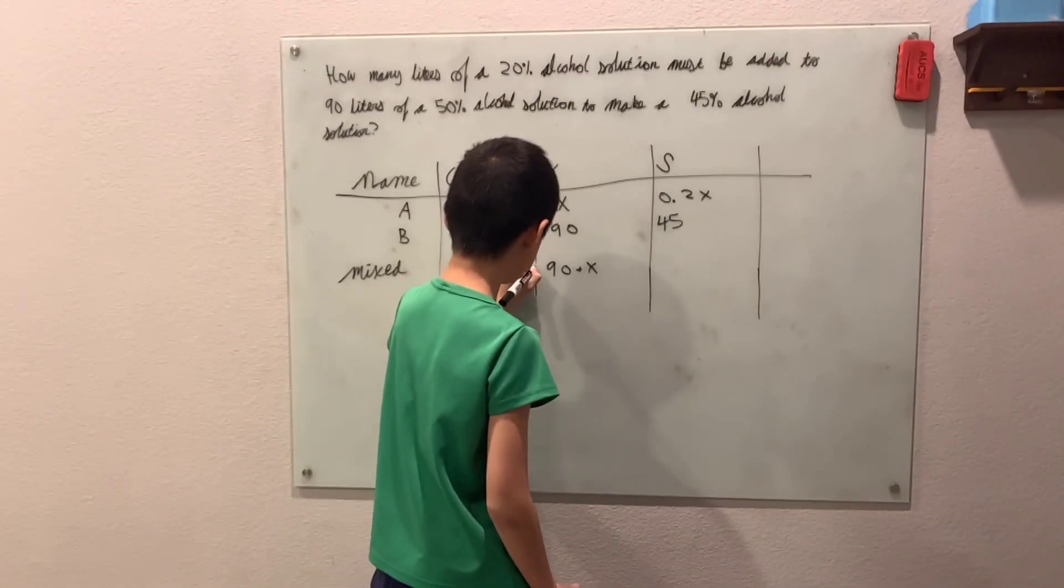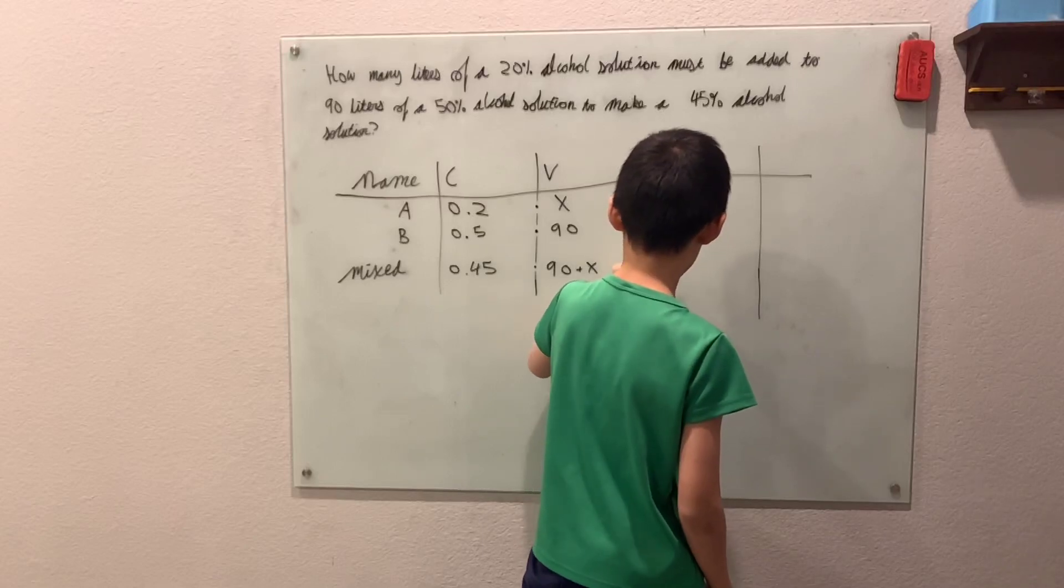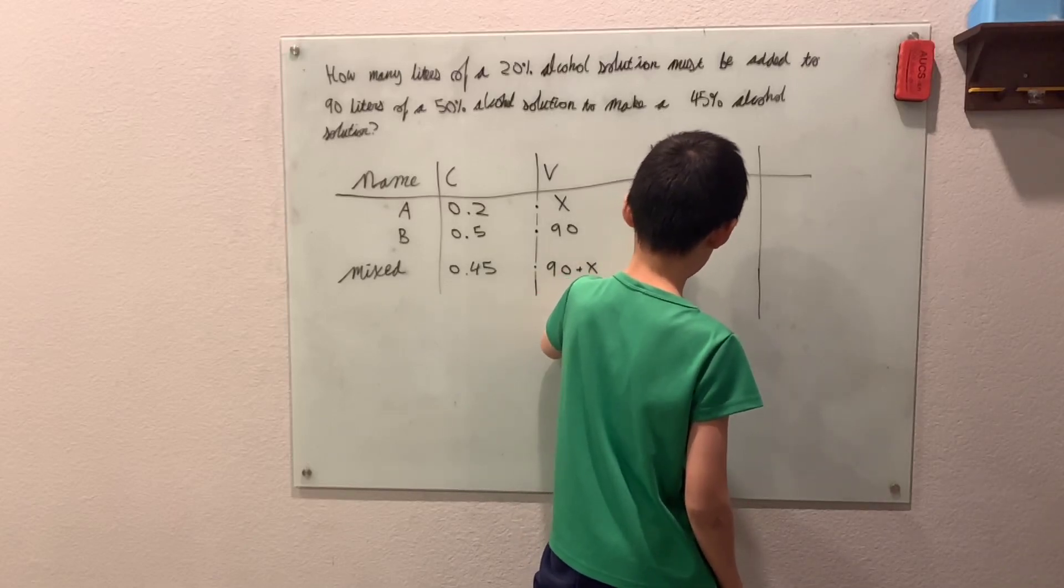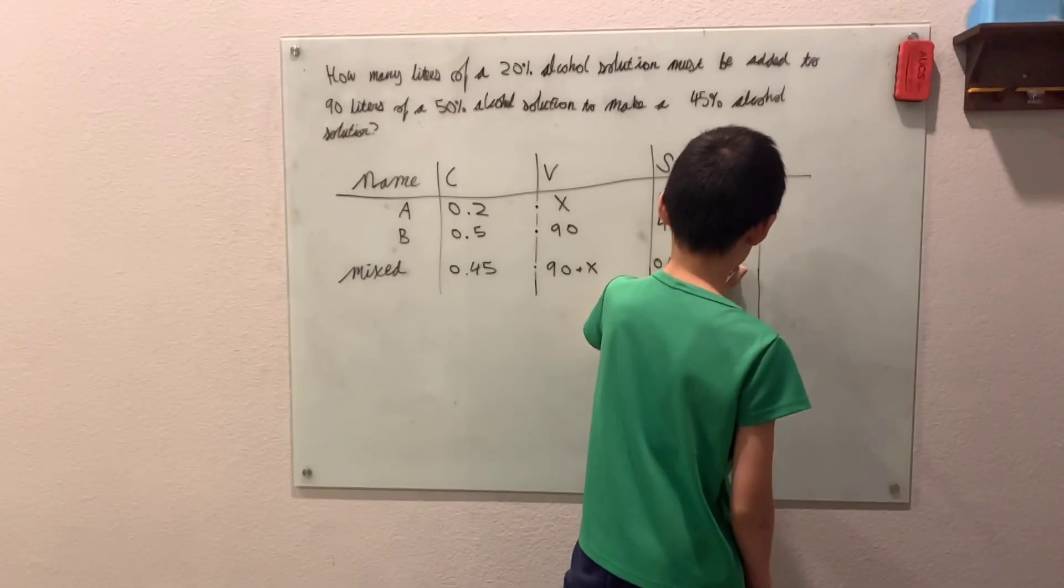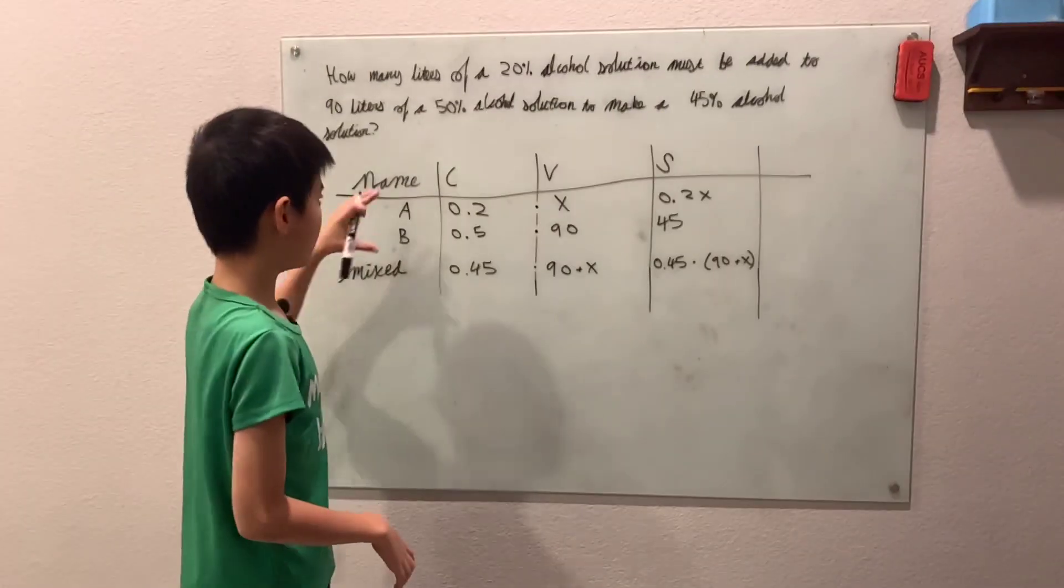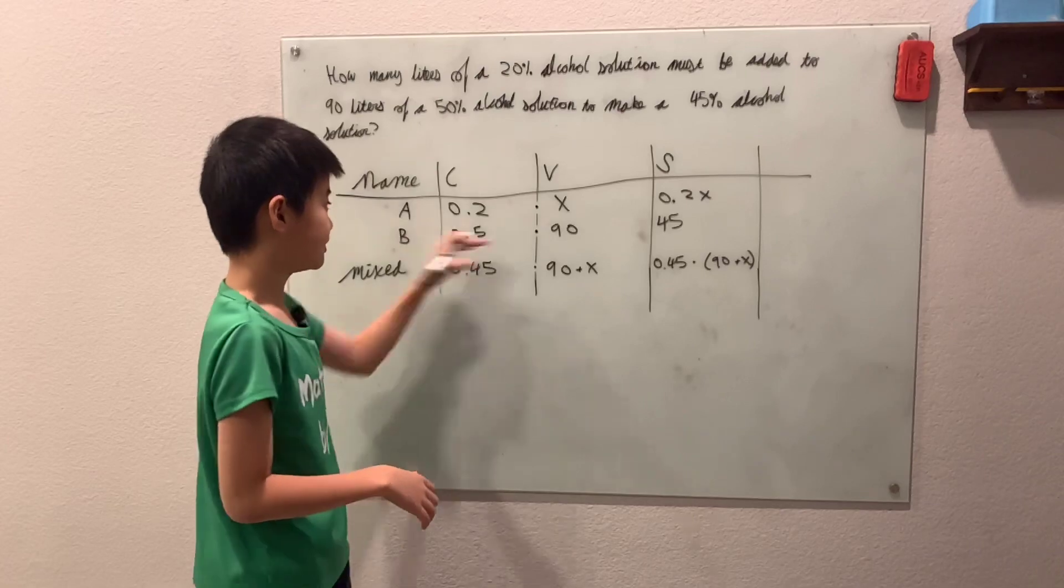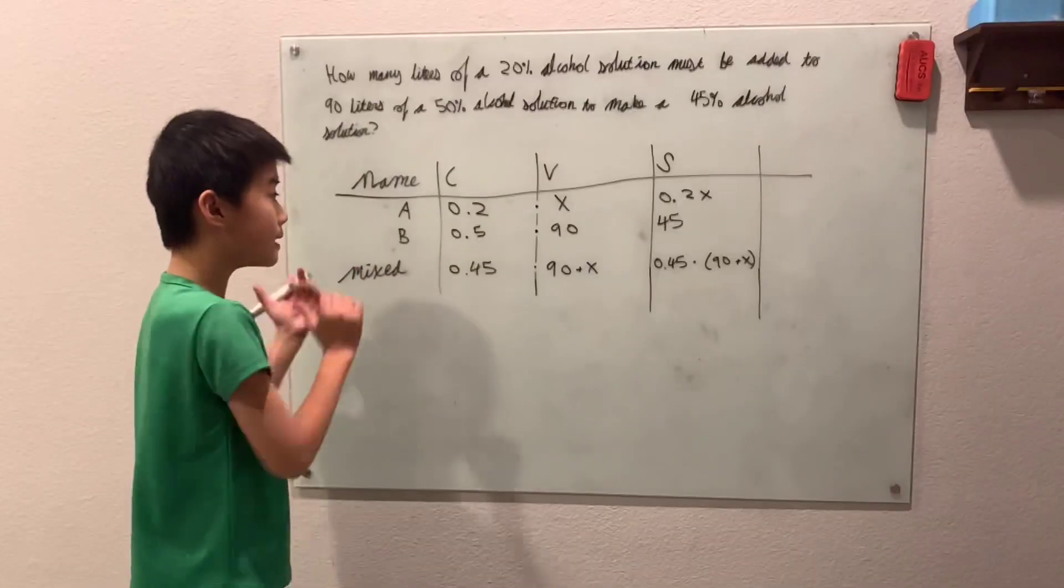So, multiplying together, we should get 0.45 times 90 plus X. And again, this is just X plus 90 added together because X liters plus 90 liters equals 90 plus X liter solution when mixed together.